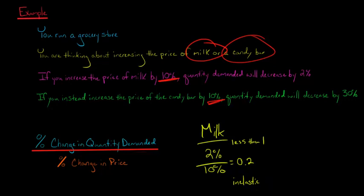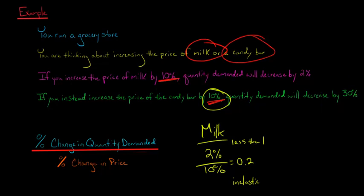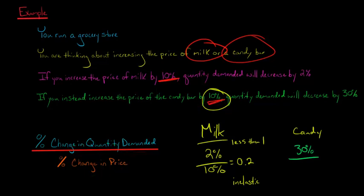They see milk as maybe a necessity or something very important. However, if you were to increase the price of the candy bar by 10 percent, you predict quantity demanded would decrease by 30 percent. So for the candy bar, in the numerator we have 30 percent change in quantity demanded, divided by 10 percent change in price. That gives us 3. Because this number is greater than one, we say that demand for this candy bar is elastic.